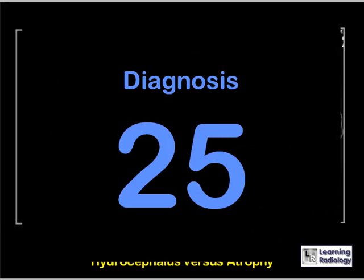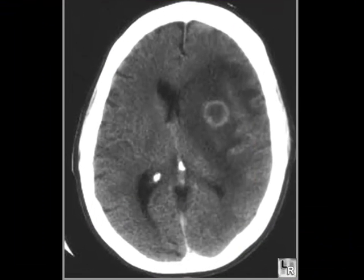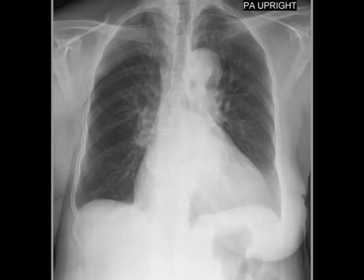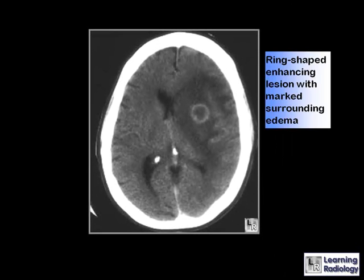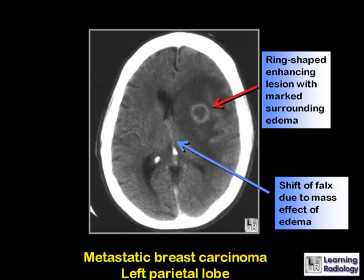What might explain this 58-year-old woman's recurrent headaches? The right breast is surgically absent. The lesion is a ring-enhancing lesion with marked surrounding edema, producing a shift of the falx due to mass effect. This is an example of metastatic breast carcinoma to the left parietal lobe of the brain.